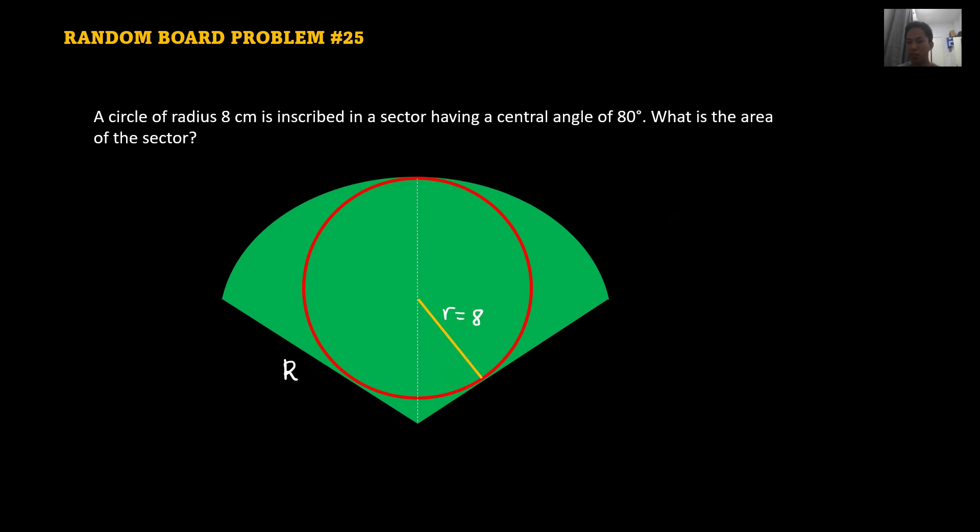So recalling guys, the area of the sector can actually be found using the proportion of angles of the central angle with respect to the whole angle which is 360 degrees. So the area of the sector can be found, that is just the area of the circle pi r squared times your proportion which is theta over 360 degrees.